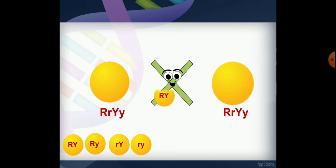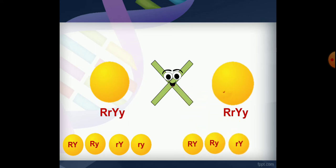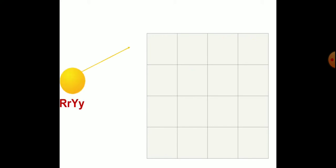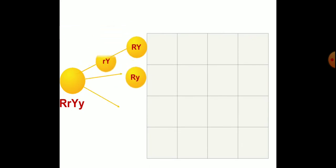Now we perform selfing — the F1 plants undergo self-fertilization. Gamete formation gives four types of gametes. The Punnett square has 16 squares. The gametes are: capital R capital Y, capital R small y, small r capital Y, and small r small y.